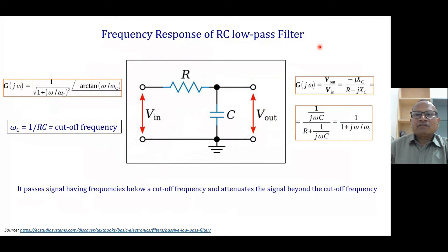Frequency response of RC low pass filter. This is a simple circuit consisting of R and C. It acts as a low pass filter. It passes low frequency signals and attenuates all high frequency signals.